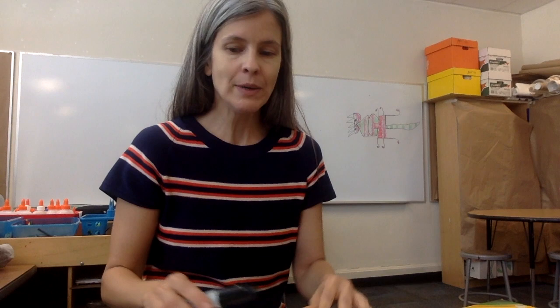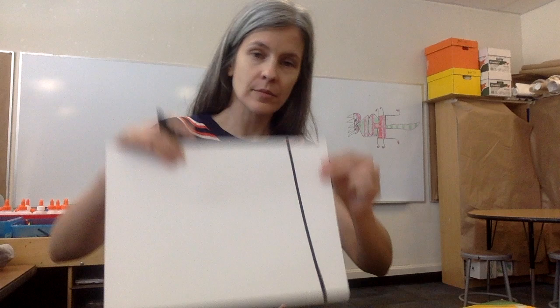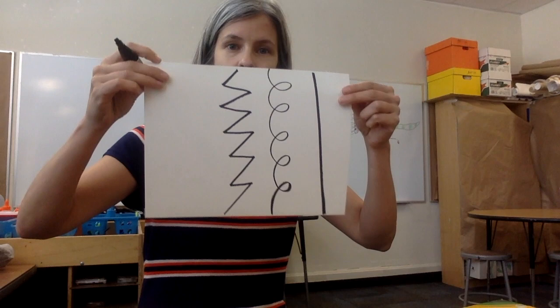To begin, you are going to make about six different kinds of lines across your paper. I'm going to make a straight line, and I'm going to leave some space. I'm going to make a curly line. Let's make a zigzag line. Let's make like a block line.